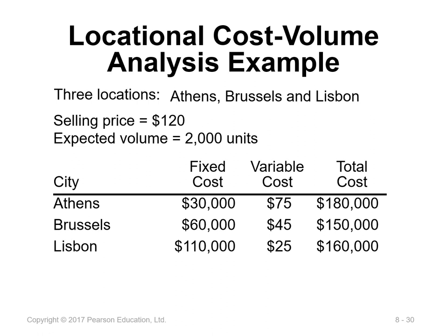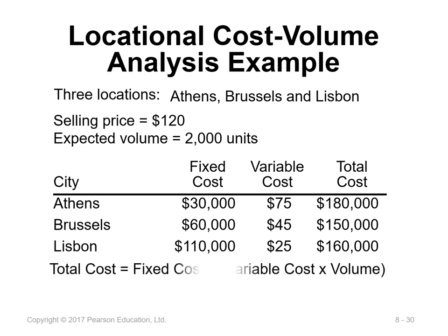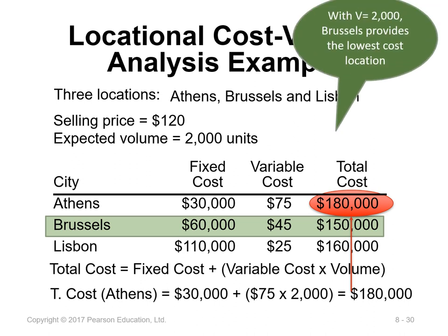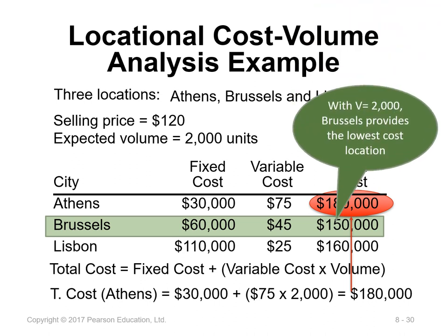Total cost = fixed cost + (variable cost × volume). For Athens: $30,000 + ($75 × 2,000) = $180,000. For Brussels: $60,000 + ($45 × 2,000) = $150,000. For Lisbon: $110,000 + ($25 × 2,000) = $160,000. The lowest total cost is Brussels. Therefore, if the company wants to produce 2,000 units, Brussels provides the lowest-cost location.